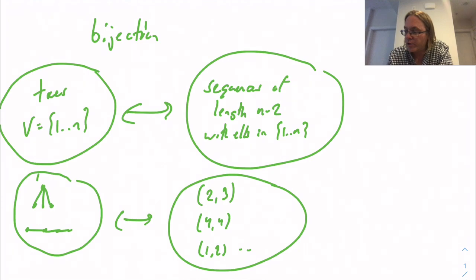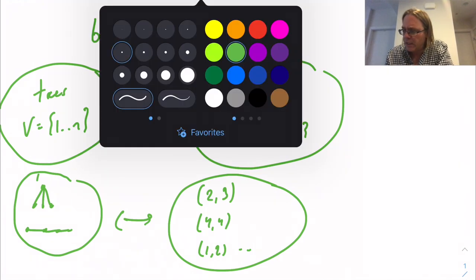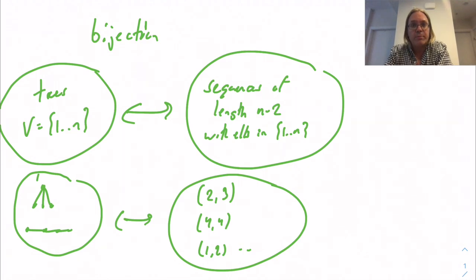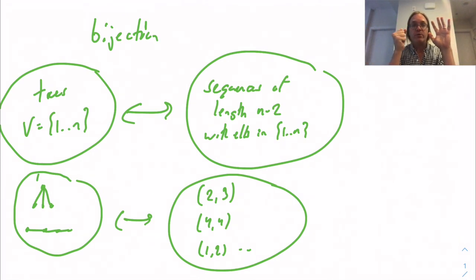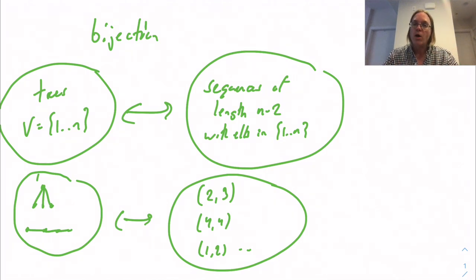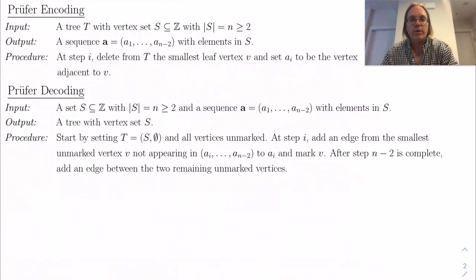So our game is to find a bijection between trees with vertex set {1, ..., n} and sequences of length n minus 2 with elements from {1, ..., n}. We're going to follow this beautiful idea due to Prüfer. It's a two-step process: we describe the bijection by taking a tree and showing how to turn it into a sequence, then taking sequences and showing how to turn them into trees, then showing those two operations are inverses of one another.